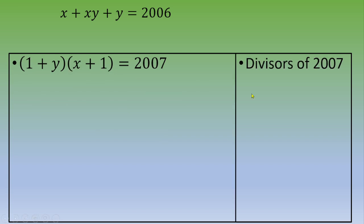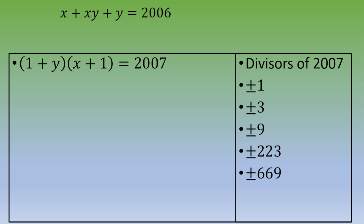The next step is to list all the divisors of 2007. These are plus or minus 1, plus or minus 3, plus or minus 9, plus or minus 223, plus or minus 669, and plus or minus 2007. We have a product of two terms equaling 2007.